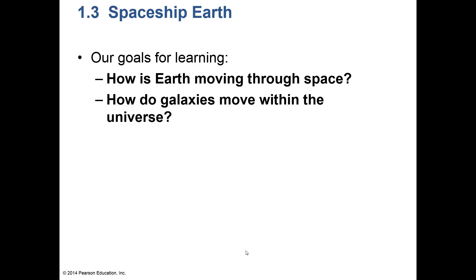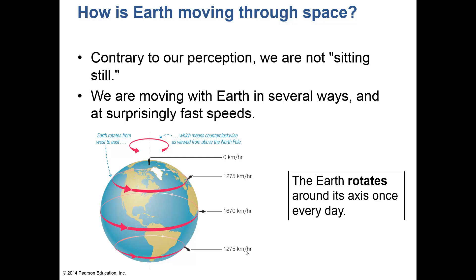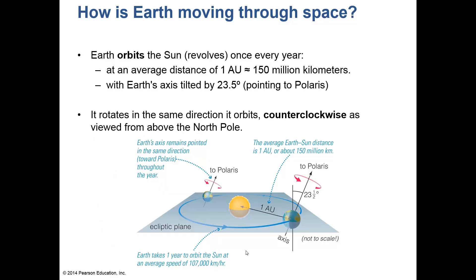Contrary to our perception, we are not sitting still. We are moving with the earth in several ways and at surprisingly fast speeds. One of these motions is rotation — the earth rotates on its axis every 24 hours. The earth also orbits the sun, which we call revolution. Don't get rotation and revolution mixed up — revolution means going around something else.